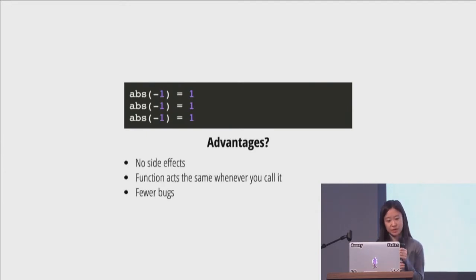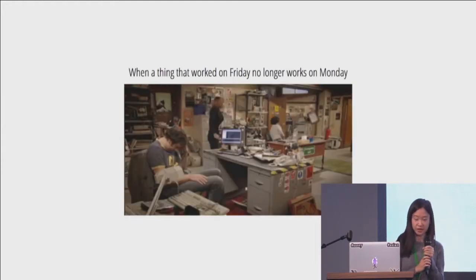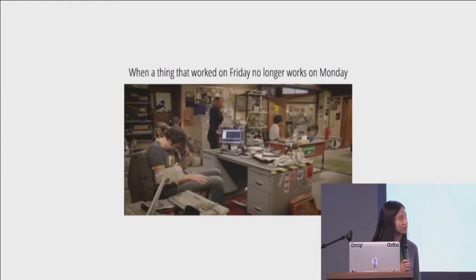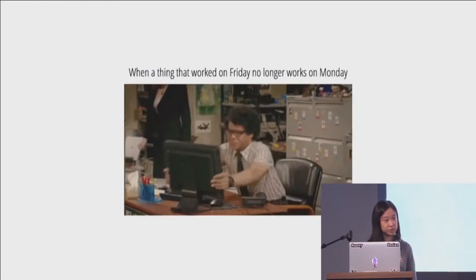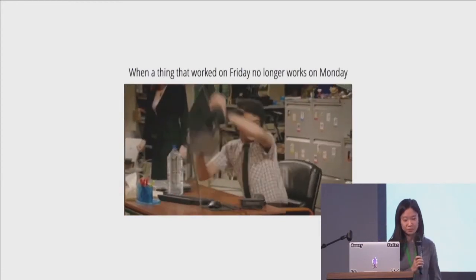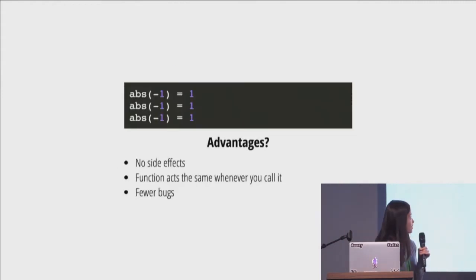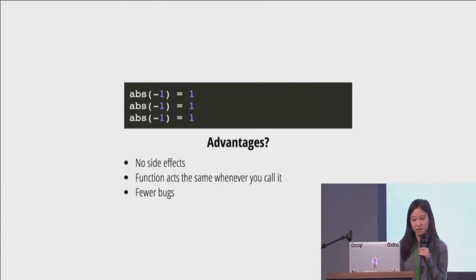There are no side effects and they produce fewer bugs. We all know that one thing that used to work, and somebody changed something which affected something else and made your code no longer work — so it sucks, right? Just think about how frustrating it will be if you give the absolute function negative one and it produces five.